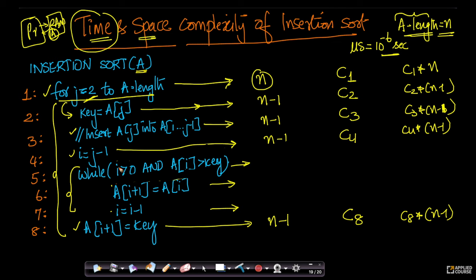Till now we have seen everything except this inner while loop. Now let's ask ourselves what this inner while loop is doing. This is the critical part in this analysis — the rest of it is very trivial. The hardest part to understand, or the most important part you should get, is this inner while loop, because that's the leap. This whole thing we have done till now is very straightforward.